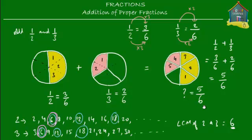So here is the solution. When adding proper fractions that are unlike, you must first change them to like fractions. Half becomes three sixths and one third becomes two sixths, then you do the addition: three upon six plus two upon six equals five upon six. Remember, you only add the numerators — three plus two equals five — and the denominator stays the same because it tells you the pizza is cut into six slices.